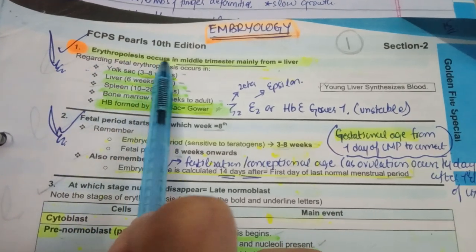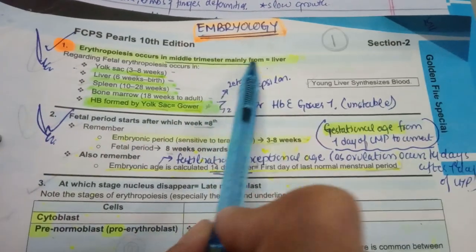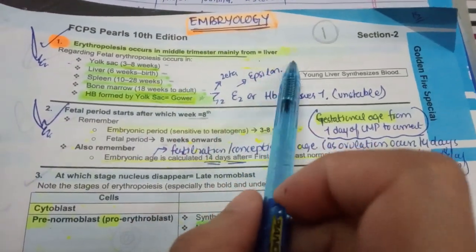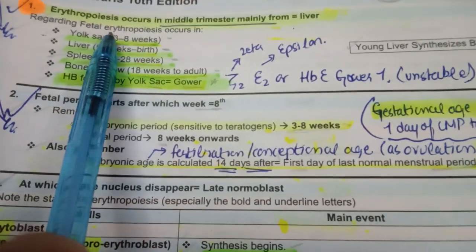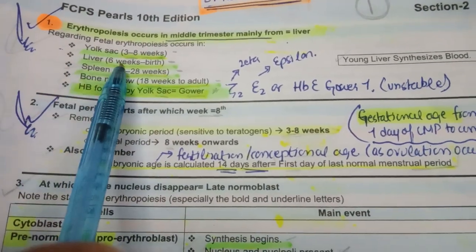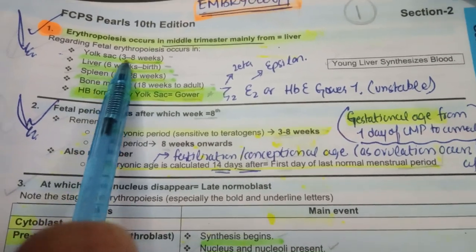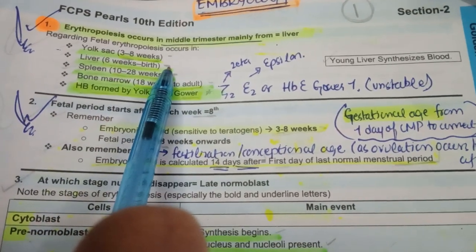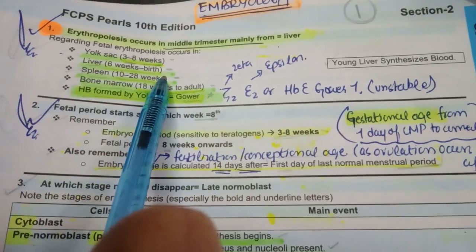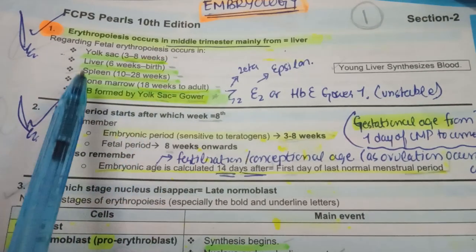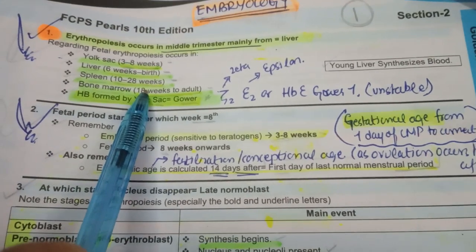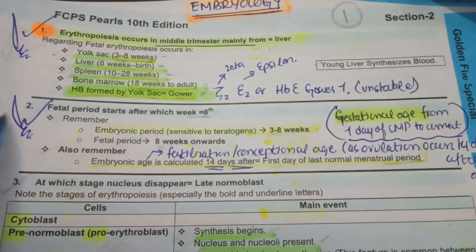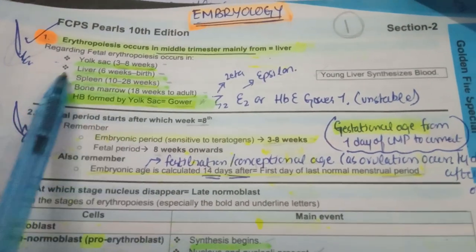Starting from point number one: erythropoiesis occurs in the middle trimester mainly from the liver. In the embryonic period, 3 to 8 weeks, it is made in the yolk sac. Then at 6 weeks the liver gets functional, and by 8 weeks the yolk sac becomes main. Then up to birth, the liver is making blood. From 10 to 28 weeks the spleen contributes, but not so majorly. From 18 weeks the bone marrow starts maturing, and then through adult life the bone marrow makes the blood.